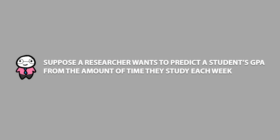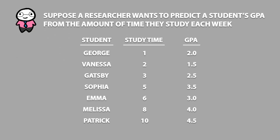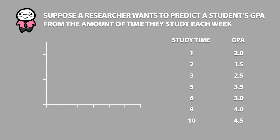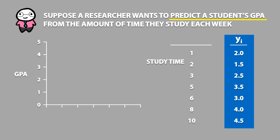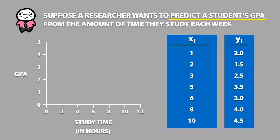Suppose a researcher wants to predict a student's GPA from the amount of time they study each week. First, the researcher needs to gather some data. We can then begin by making a graph. Since the researcher is trying to predict a student's GPA, we will have GPA on the y-axis. So by default, GPA will correspond to the y values, and study time will correspond to the x values. Then, we could choose to make a scatterplot with this data.